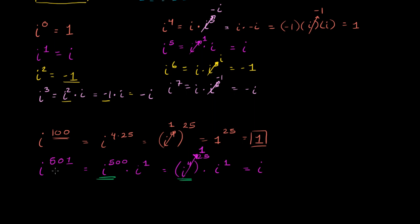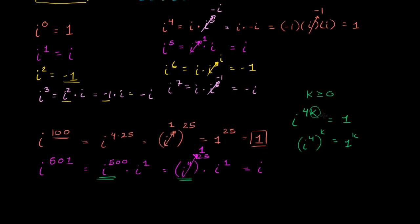So it seems like a really daunting problem, but you can use this cycling to realize that i to the 500th is just 1, and i to the 501st is just i times that. Generally, i to any multiple of 4 — i to the 4k, where k is greater than or equal to 0 — equals 1, because that's i to the 4th power to the kth power, which is 1 to the k, clearly equal to 1. And if we have i to the 4k plus 1 or 4k plus 2, we can use this same technique.